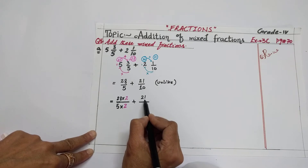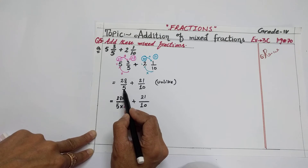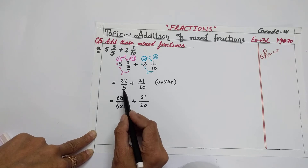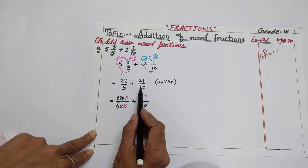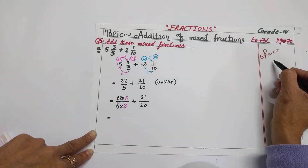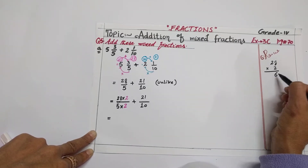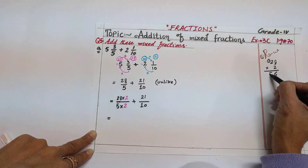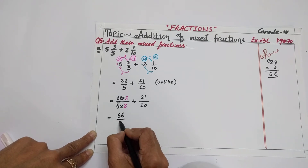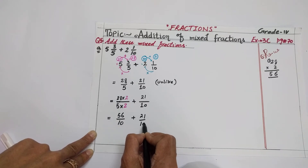The second fraction, 21 by 10, will remain as it is, because we only need to change the fraction with the smaller denominator. Now solving: 28 times 2 equals 56 — so the first fraction becomes 56 by 10. Plus 21 by 10. Clear?